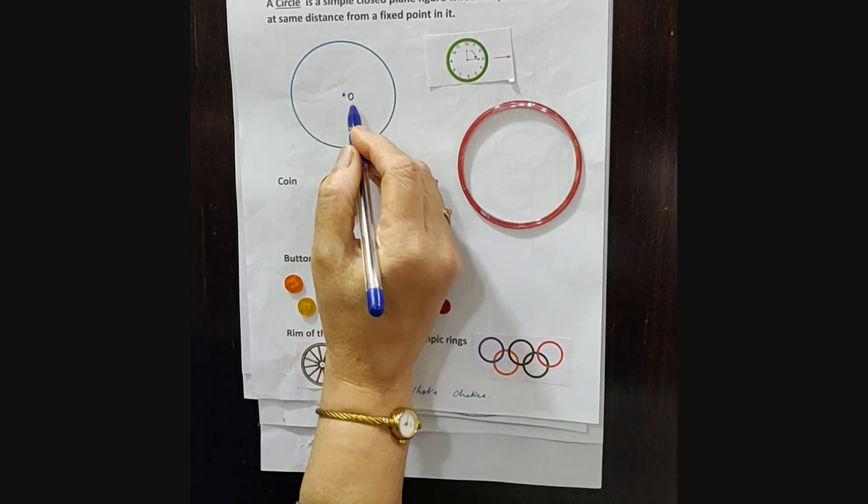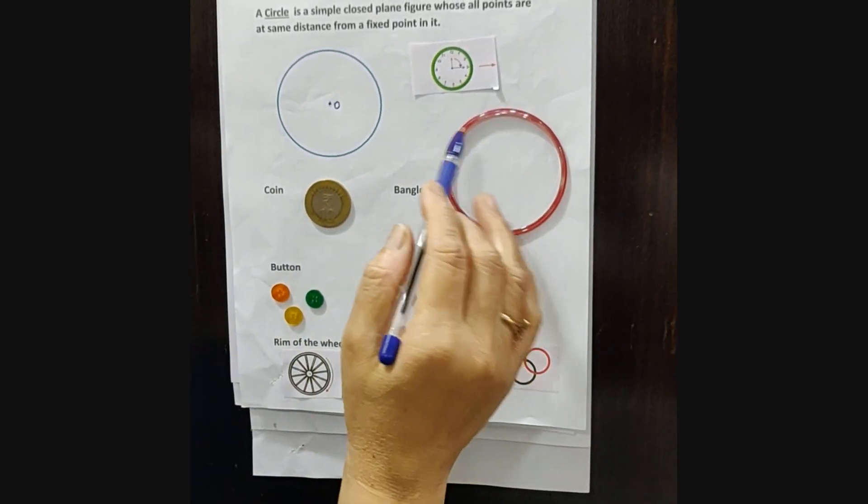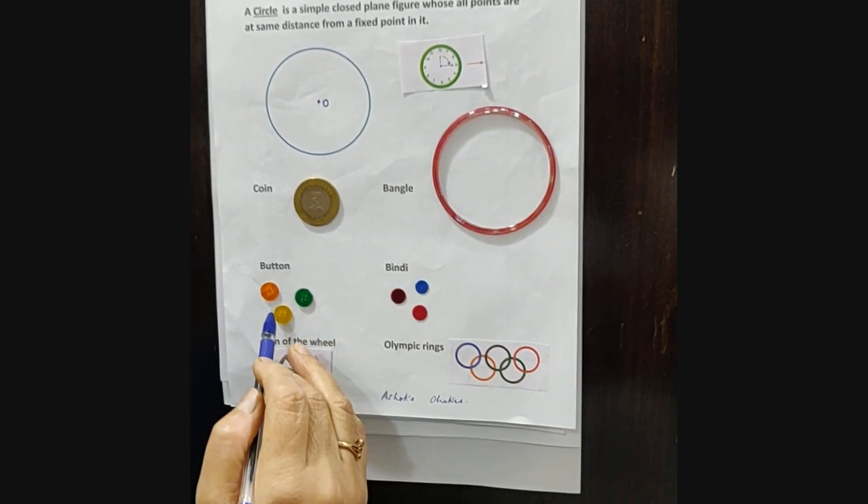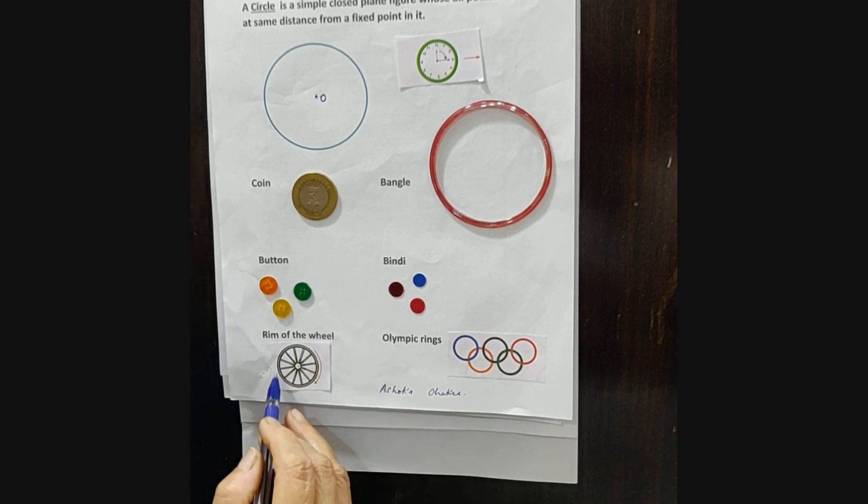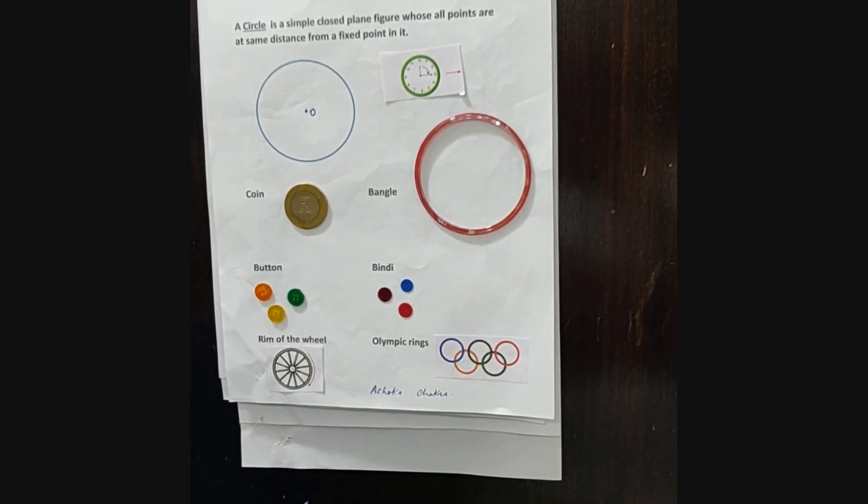The fixed point is depicted as O. You have observed so many things around you: dial of the clock, coin, bangle, button, bindi, rim of the wheel, and Olympic rings. All are circle in shape.